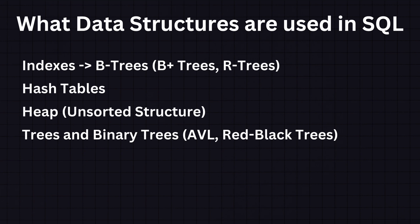For some special use cases, databases might also use types of trees including binary trees, AVL trees, or red-black trees, each offering different performance characteristics for balancing, searching, inserting, and deleting data. In some cases, SQL databases use R-trees instead of B-trees — R-trees are used for spatial access methods like indexing multi-dimensional information such as geographical coordinates. For indexing certain types of string data, they use tries or prefix trees, which provide efficient means of searching for keys with common prefixes.